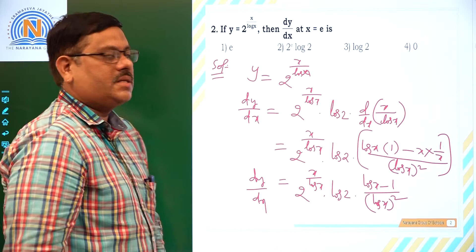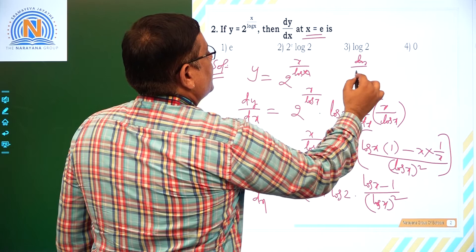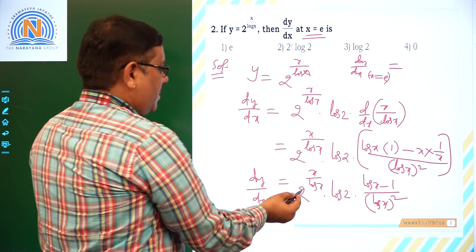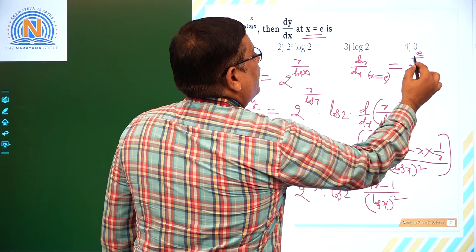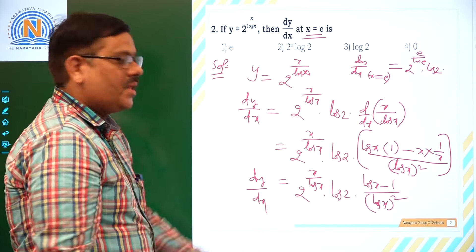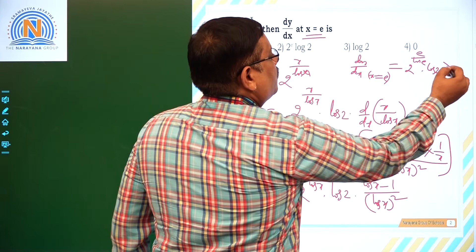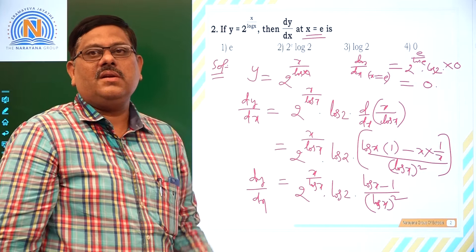Now what is asked is dy/dx at x equal to e. Substituting x = e: the expression becomes 2^(e / log e) · log 2 · (log e − 1) / (log e)². Since log e = 1, we get log e − 1 = 1 − 1 = 0. So this entire expression becomes 0. Zero times any finite value results in 0. So the answer for this question is 0, which is the fourth option.